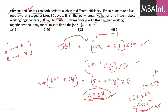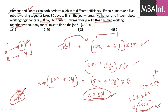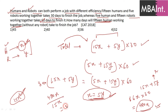They are asking how many days 15 humans working together will take. Each human has efficiency x, so 15 humans have efficiency 15x. Number of days = 480x ÷ 15x = 32 days. That's the answer — and this question could have been solved in under one minute if you can form the equation.